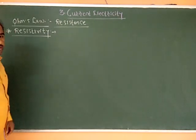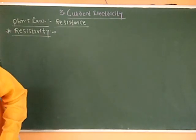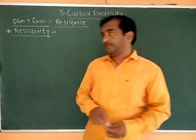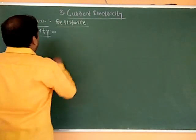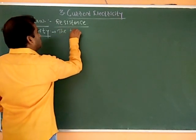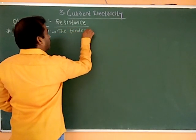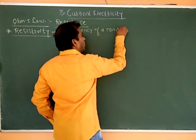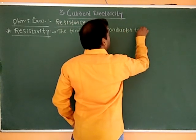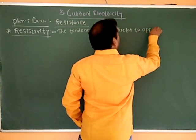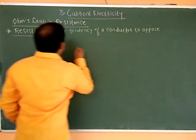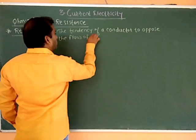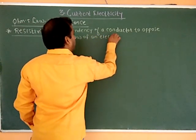The property known as resistivity — what is resistivity? Resistivity is the tendency of a conductor to oppose the flow of electric current.